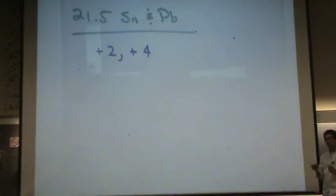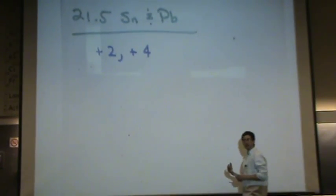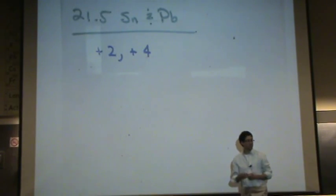They're formed by roasting and then reduction. So if you remember your metallurgy a little bit, roasting and then reduction is how they're formed.